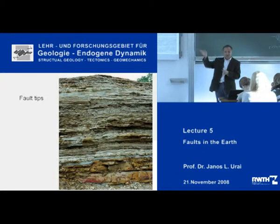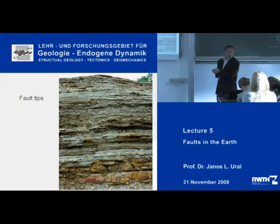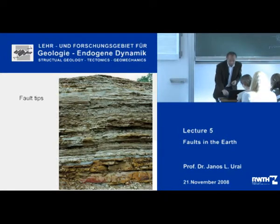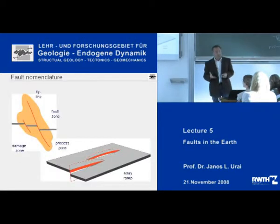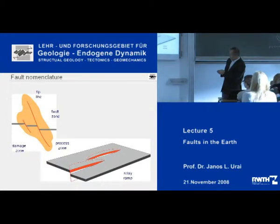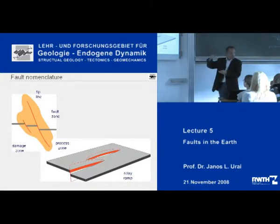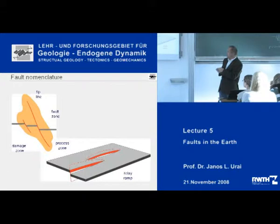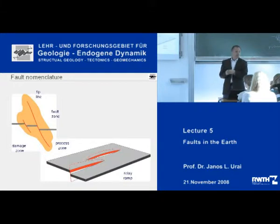Faults are not structures which continue indefinitely in the earth — they can actually stop. Down here there is an offset, but here the layer is not offset anymore; the fault just terminates. To explain this in more detail, in this three-dimensional diagram, if you look at one side, there is a fault, but if you go up, at one point the offset stops. This point is called the fault tip, and the fault tip is in fact a line — called the tip line.